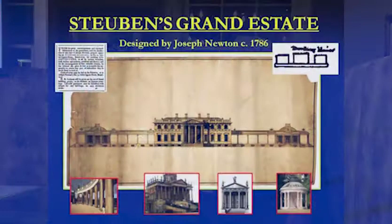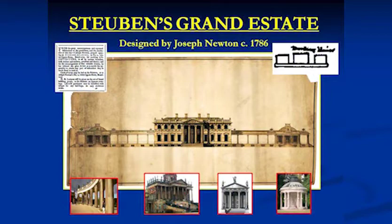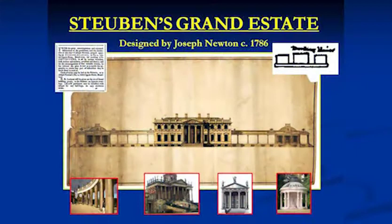The next incredible find: do you remember the footprint on Benjamin Wright's map? It's a central core with two flankers — looks very similar to Mount Vernon. One of the things that Steuben was doing in New York is he engaged an architect by the name of Joseph Newton, and we've only just discovered this within the last two months. This elevation was Steuben's dream house — his retirement estate. We know that Joseph Newton was teaching architecture between 1785 and 1786.